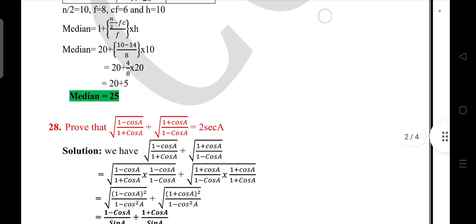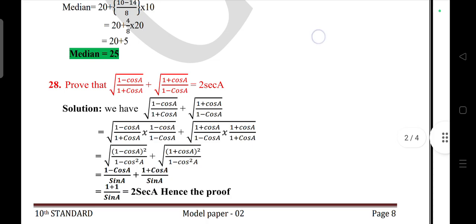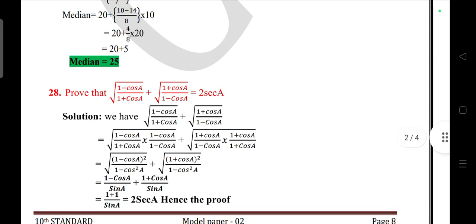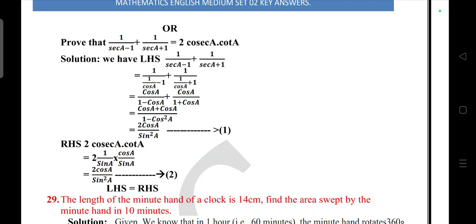Question 29: Prove that √[(1 - cos A)/(1 + cos A)] + √[(1 + cos A)/(1 - cos A)] = 2 sec A. Question 30: Prove that 1/(sec A - 1) + 1/(sec A + 1) = 2 cot² A.